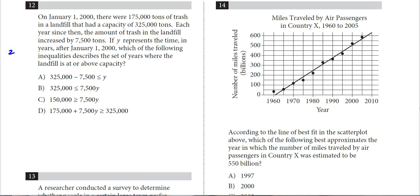So let's kind of look at all these things. First of all, we want to figure out when we are at or above capacity. So at or above means we're going to be greater than or equal to. Capacity was 325, so I'm figuring that's going to be part of this equation. I started with 175, so I started with 175,000. And then I'm increasing by 7,500 tons per year.